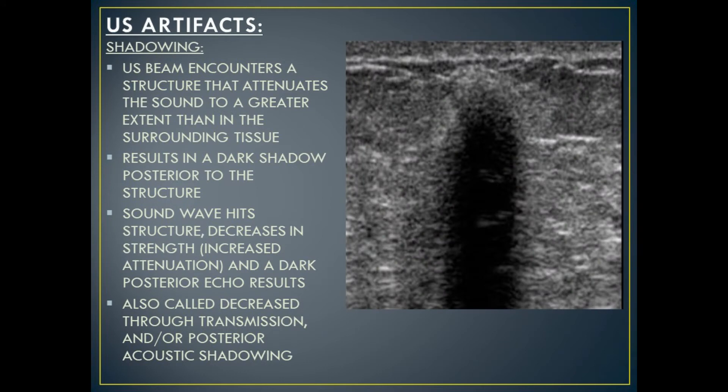The next type of attenuation artifact is shadowing — the opposite of enhancement. The ultrasound beam encounters a structure that attenuates the sound to a greater extent than the surrounding tissue, resulting in a dark shadow posterior to the structure. When a sound wave hits a structure and decreases in strength — meaning increased attenuation — a dark posterior echo results. This is also known as decreased through transmission or posterior acoustic shadowing. Shadowing can be a hindrance by obscuring anatomy or pathology, but it can also be helpful in characterizing dense structures on ultrasound.